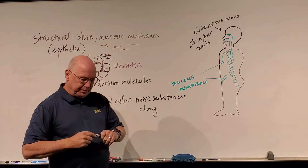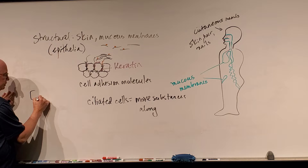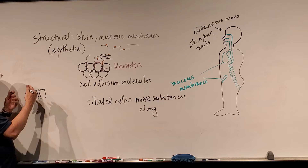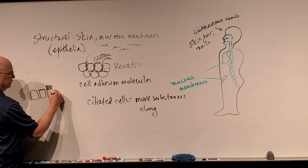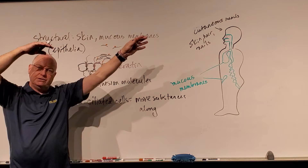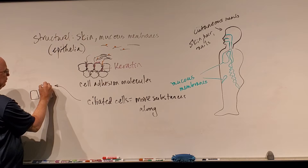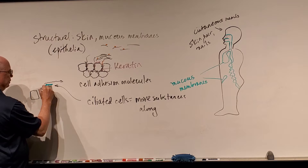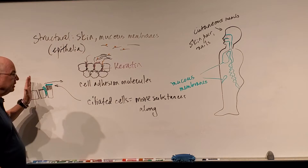Some cells have very long membranous extensions called cilia. The cilia have proteins in them that cause them to beat, and as they beat or move, they continue to push substances along. Ciliated epithelial cells usually secrete mucus, or we have goblet cells that secrete mucus. That mucus traps dirt, dust, debris, or pathogens, and then the cilia move them along.